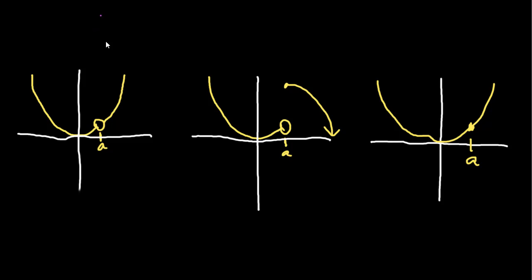So far on this channel we've been exploring ways in which the limit as x approaches some point a of f(x) is not always the same thing as f(a). We can see that with the examples on screen. In our first graph, the limit as we approach a from both the left and right side approaches f(a), but there's a hole — a discontinuity — so f(a) does not exist. This shows that the limit as x approaches a is not the same as f(a).